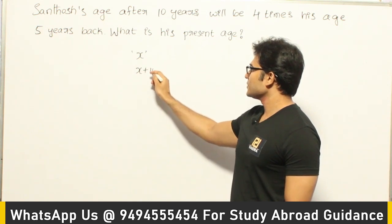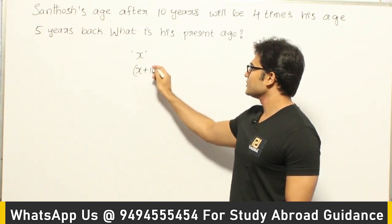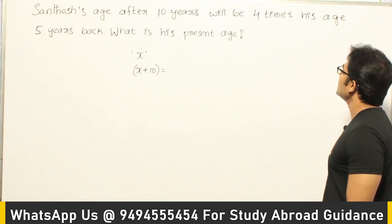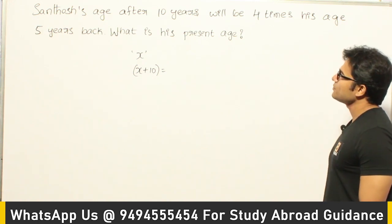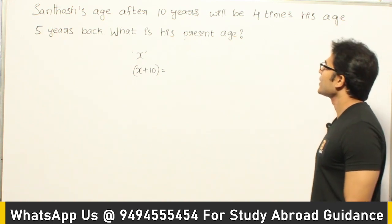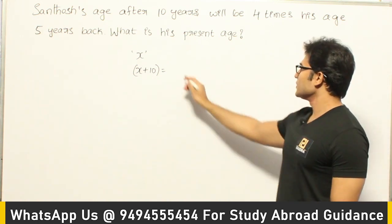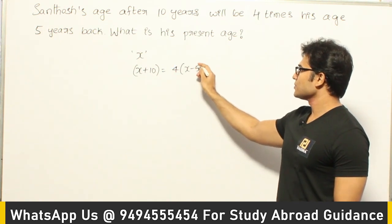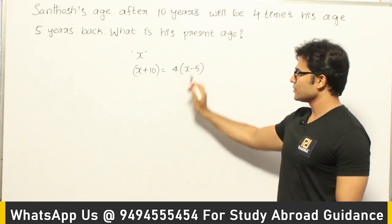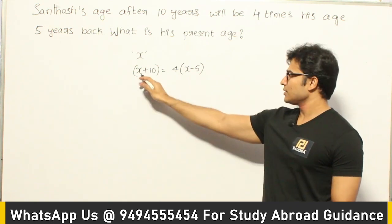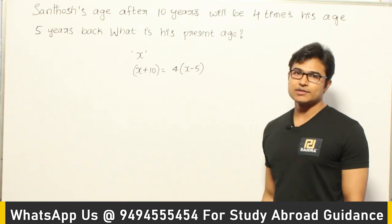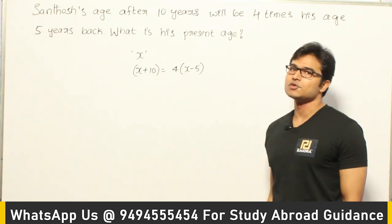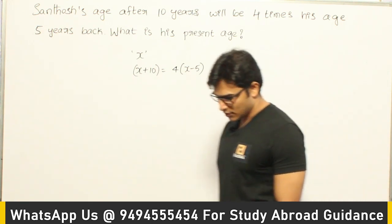So x plus 10 is equal to four times Santosh's age five years back. Five years back his age will be x minus 5, so four times that is 4(x minus 5), which equals 4x minus 20. This is the relation between these two expressions.